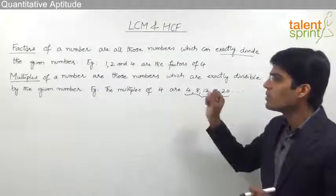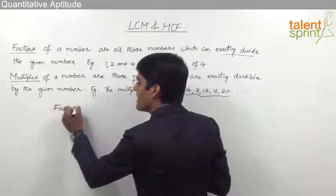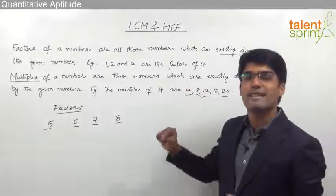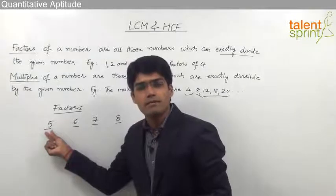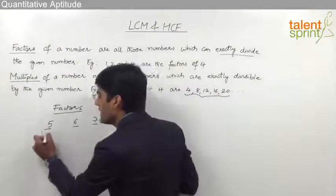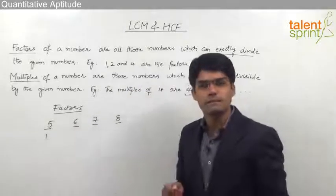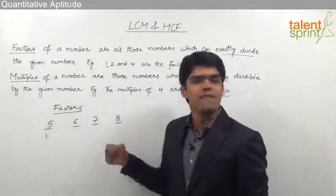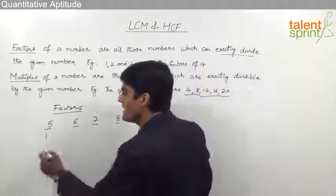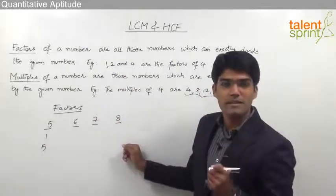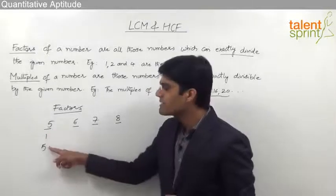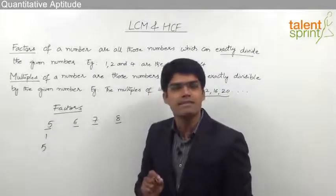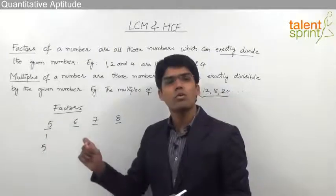Let us find out the factors of 5, 6, 7 and 8. For 5, the numbers which can exactly divide it are 1 — since 5 by 1 equals 5 — and 5 itself, since 5 by 5 equals 1. Numbers like 2, 3 and 4 do not divide 5 exactly. We also cannot go beyond 5 because any number greater than 5 would give an answer less than 1, which is not an integer. So 1 and 5 are the only factors of 5.